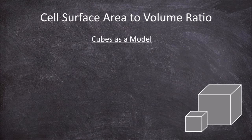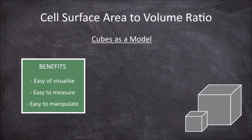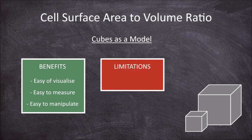Cubes are often used as a model for looking at the surface area and volume of a cell. The benefit of using cubes as a model is that they are easy to visualise, measure, and manipulate. Whereas real cells are hard to visualise, measure, and manipulate due to their microscopic size and varied shapes. The limitation of using cubes as a model is that cells are mostly not cubic.